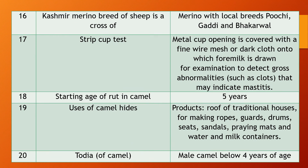Question 16. Kashmir Merino breed of sheep is a cross of which breeds? Answer: Merino breed is crossed with local breeds Pucci, Gaddi, and Bakarwal.